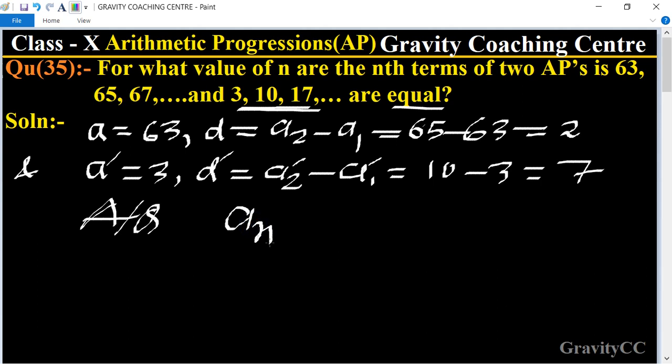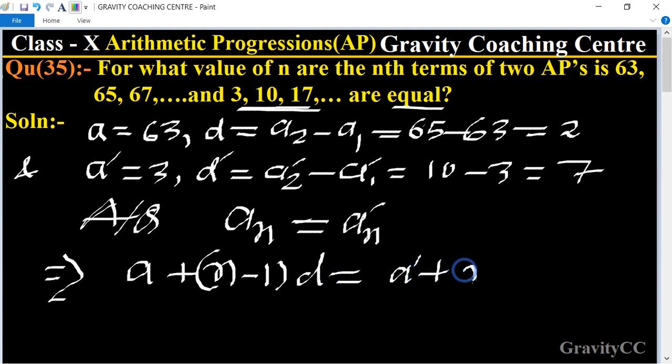So according to the question, the nth term of the first sequence and second sequence are identical, equal. So now we put the formula of nth term: a plus n minus 1 d equals a dash plus n minus 1 d dash.